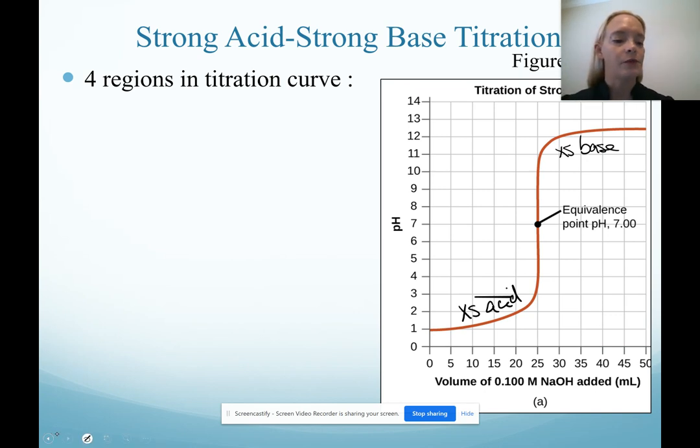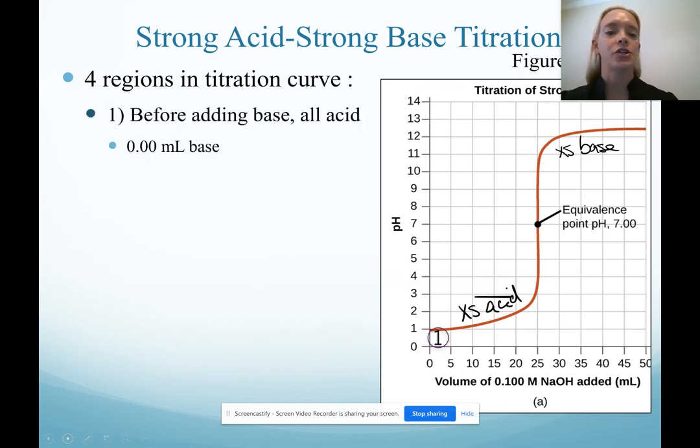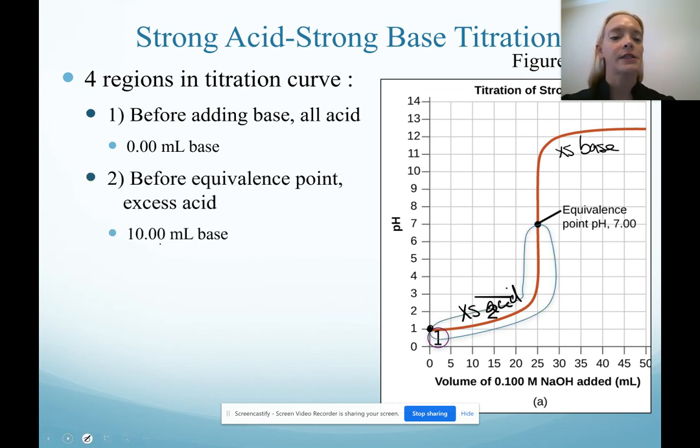So the four points that we have in a titration are before we had any base, 0.1, zero mils of base, really we just have acid in solution. Region two is where we have excess acid, so before our equivalence point. So anything from 0 to 25 we're going to calculate at 10.